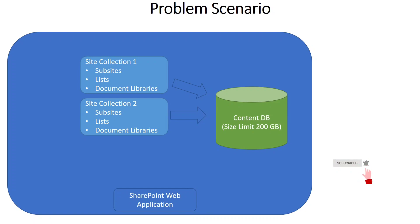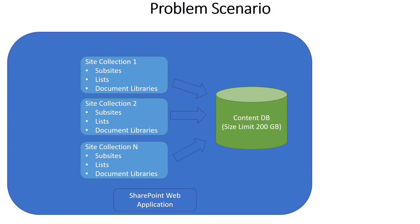If you create one more site collection in the same content database, the data from that site collection is also stored in the same content database. Ultimately, you may reach N number of site collections in that content database, with all data being saved there. The content database size limit keeps rising and you may be unaware that the database size needs to be limited in order to maintain optimal performance.